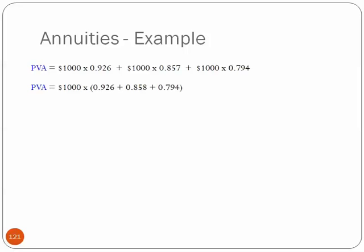We can draw out the $1,000 from each of these terms because it's common to them. So it's really just the $1,000 times, and then we can add up the present value interest factors, 0.926 plus 0.858 plus 0.794. That's just $1,000 times 2.577. The math is identical. I'm just rearranging terms a little.